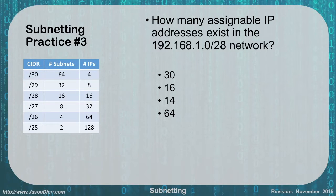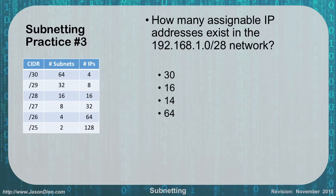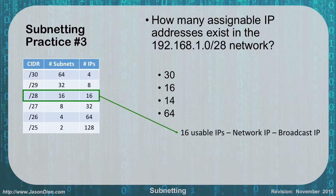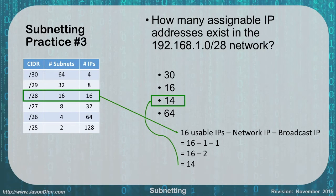Our final problem, problem number three, is the same as the last: we want to find the number of assignable IP addresses for a 192.168.1.0/28 network. For a slash 28 network we have two to the fourth number of IPs minus two for the broadcast and the host. Two to the fourth gives us 16, minus two gives us 14. And that's our answer.